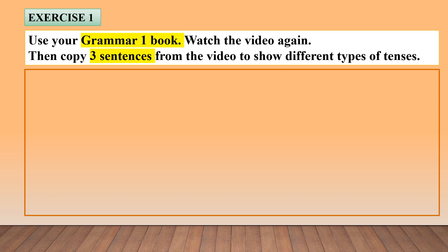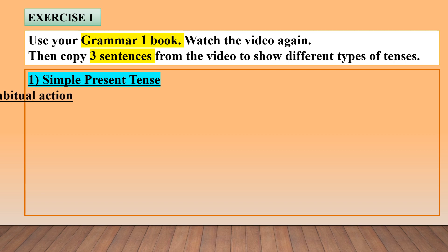There are three types of tenses that you have learned. You have number one, the simple present tense. So for this simple present tense, afterwards you write into your book: simple present tense, habitual action. And I want you to write three sentences — copy three sentences from the video that show habitual action.